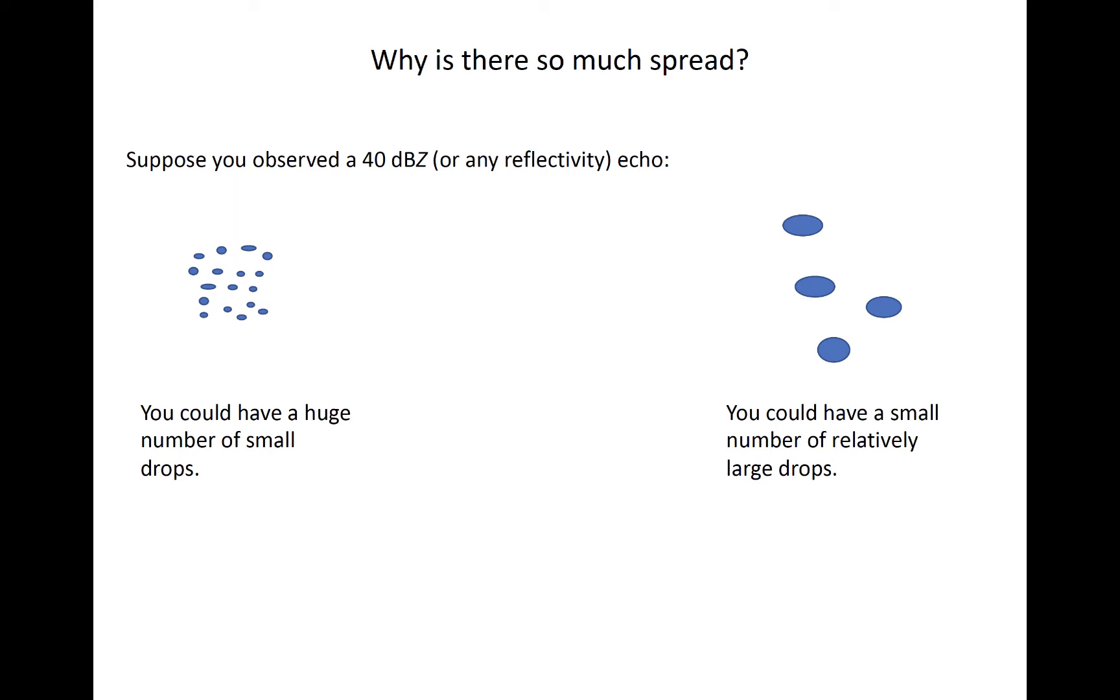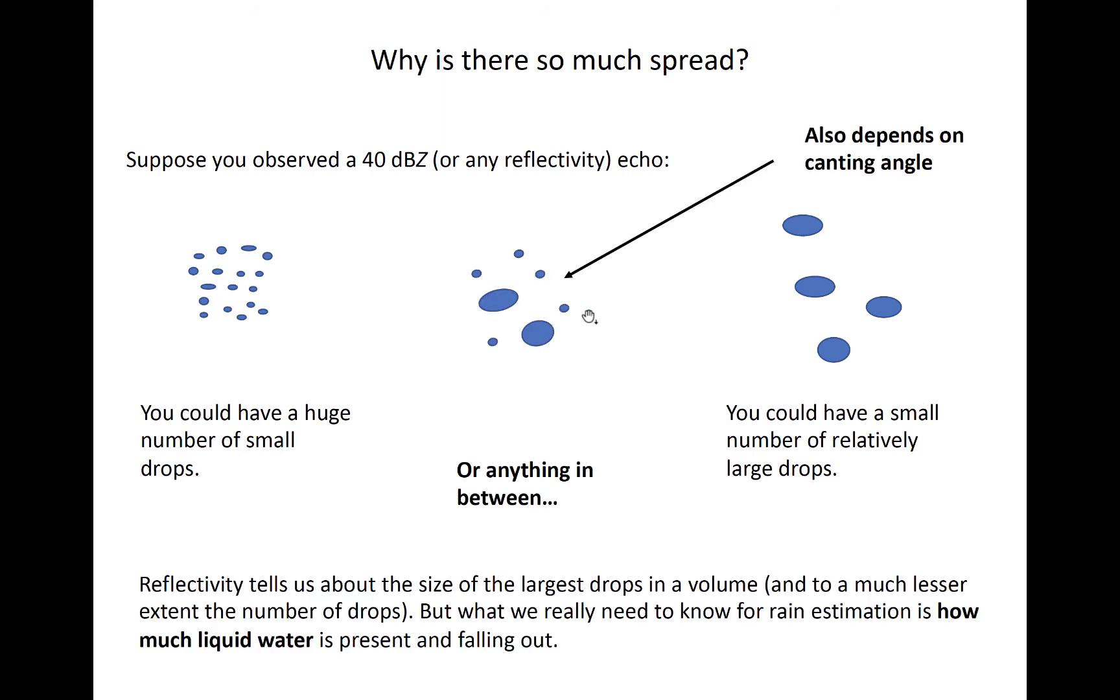To get a 40 dBZ echo, a volume could consist of a very large number of small drops, although this is unlikely. More likely the volume would contain a relatively small number of large drops, or somewhere in between.